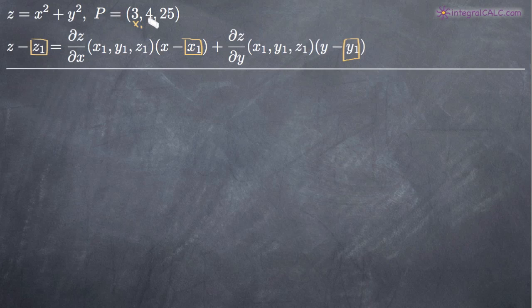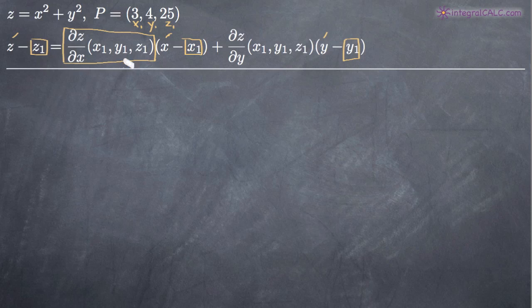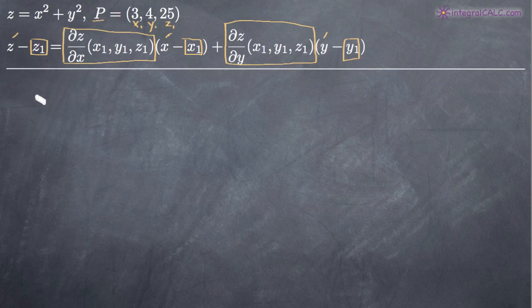We've got x sub 1, y sub 1, and z sub 1 — so we already know those three pieces of information. We're going to leave z, x, and y in the final answer for the equation of the tangent plane, so we don't even have to do anything with those. All we have left is the partial derivative with respect to x at the point P, and the partial derivative with respect to y at the point P. That will give us all the information we need.